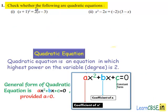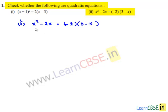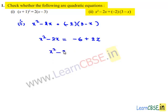Coming to the second bit: x² - 2x = -2(3 - x). On the left hand side we have x² - 2x, and on the right hand side we have -2(3 - x), so minus 2 times 3 is minus 6 and minus 2 times minus x is plus 2x. Transposing the terms to the left hand side, the equation becomes x² - 2x + 6 - 2x = 0, which simplifies to x² - 4x + 6 = 0.